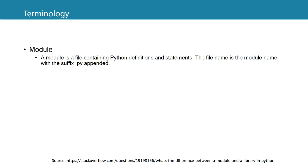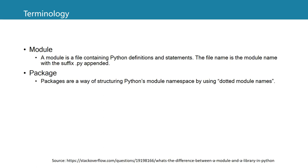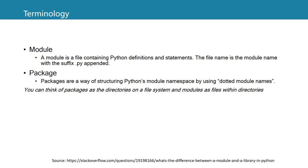Let's first have a look at some terminology, which can be confusing. A module contains Python definitions and statements, but is stored in one file with a .py extension. A package is a way of structuring these modules using dotted module names. You can think of packages as directories on a file system and modules as files within those directories, separated by a dot.